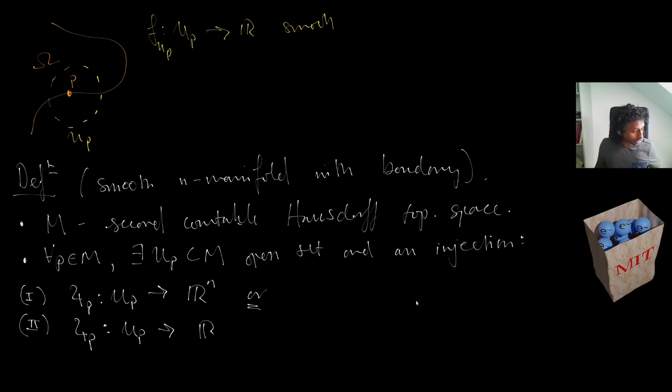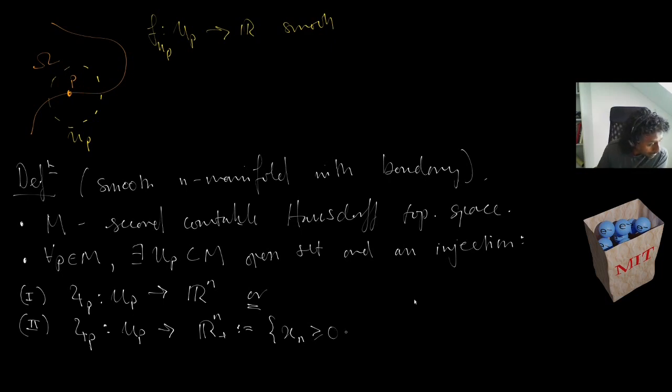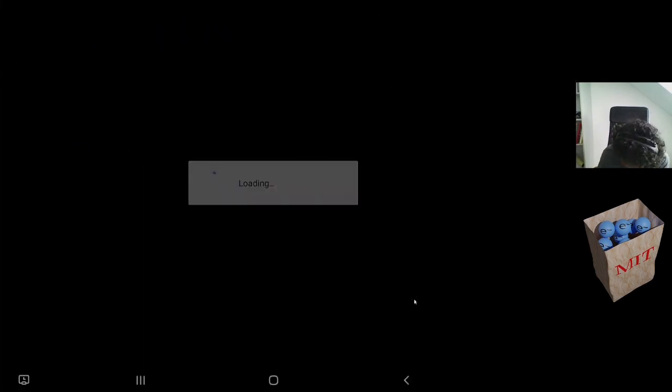Furthermore, we want a compatibility condition: if W equals U_p ∩ U_q is non-empty, then the composition ψ_q of W to ψ_p of W — both subsets of R^n — should be smooth in the sense we just talked about.